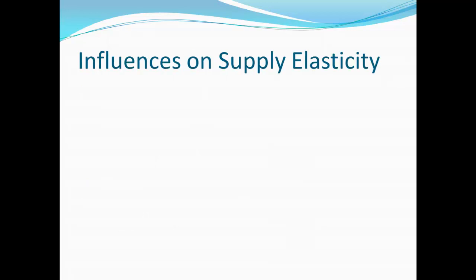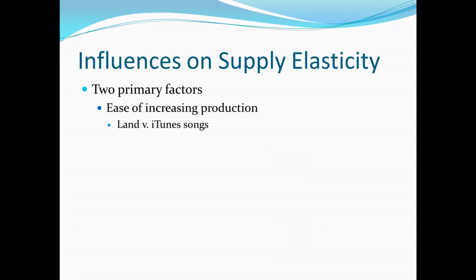Where there are differences is when we look at the influences on the elasticity of supply. There are really just two primary factors. The first one is the ease of increasing production. We can think of a good like land. The supply of land we would expect to be extremely inelastic. That is, even if the price of land doubles, we don't expect there to then be twice as much land provided on the market. After all, land is extremely difficult to produce.